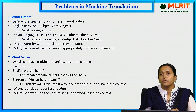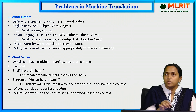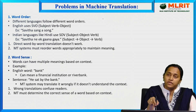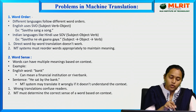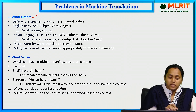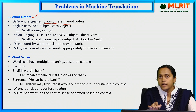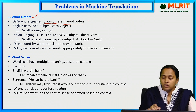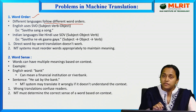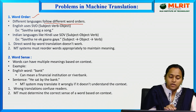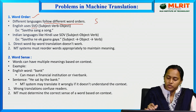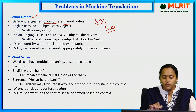Coming to the problems in machine translation — there are some problems we face when translating one language to another. The first one is word order. Different languages follow different word orders. In Telugu we follow a certain order; in English we follow syntactic grammar rules; in Hindi, Telugu, and Sanskrit, different word orders apply. Languages use structures like SVO (subject-verb-object) or SOV (subject-object-verb).